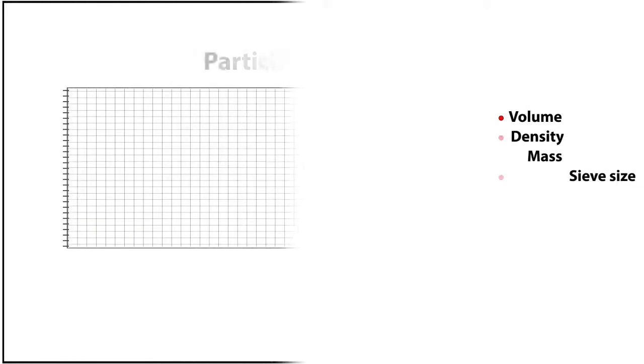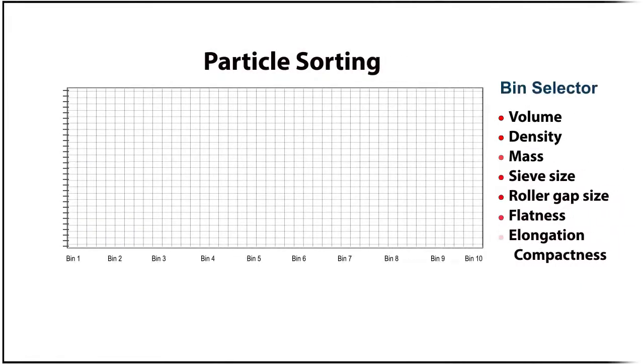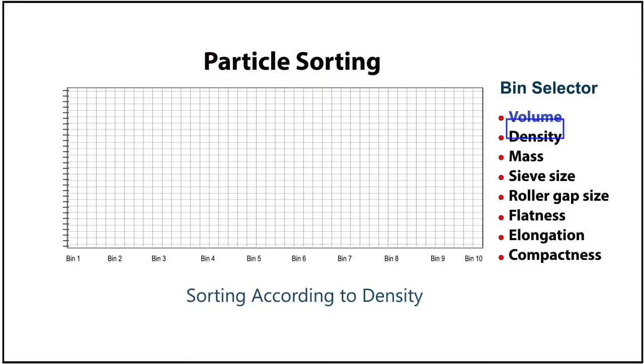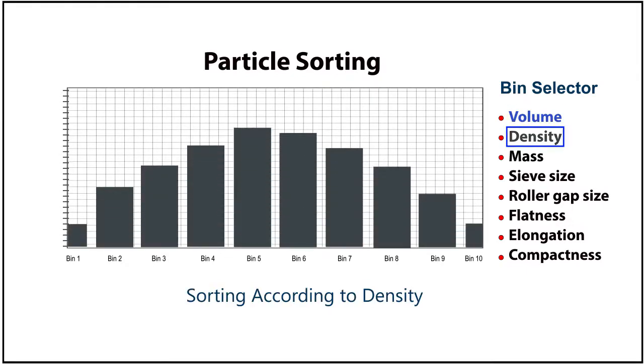An optional extra that can be ordered with the unit is a sorting facility which enables the sample to be sorted in up to 10 user-predefined parameters, for example, volume, density, mass, etc.